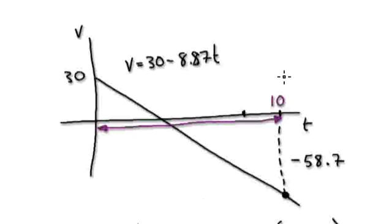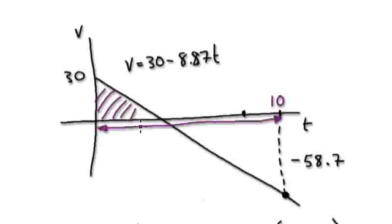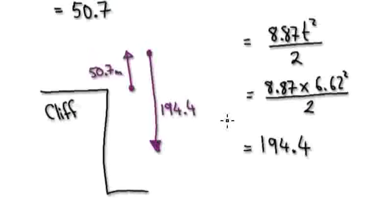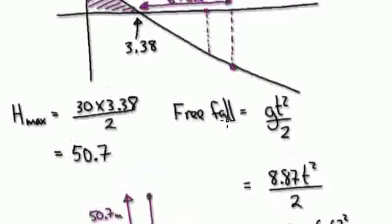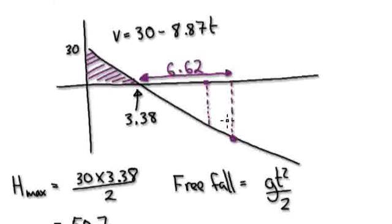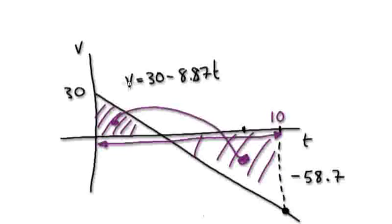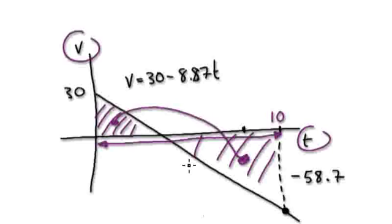Learn to jump to this method: once you have your velocity-time graph and want to know the displacement, it's basically these two areas added together, and you use the trapezium rule to merge the two areas together. The reason I showed you the long-winded route is so you get a picture of what's going on. But learn to jump straight to the velocity-time graph and use the trapezium rule to find the answer.